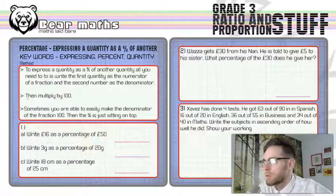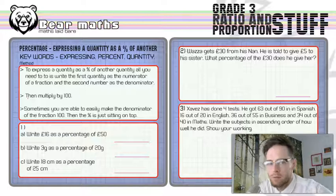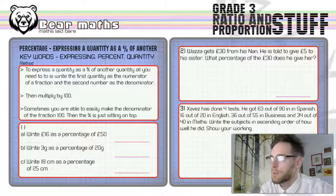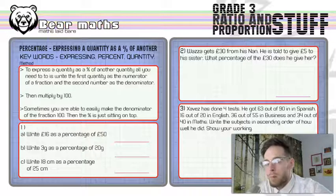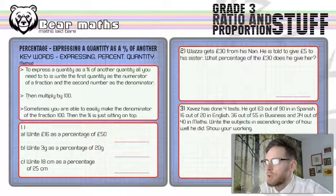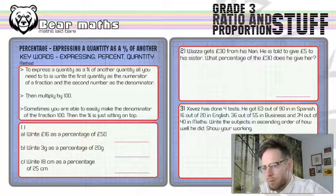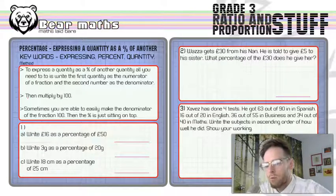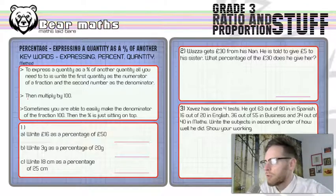To express a quantity as a percentage of another quantity, all you need to do is write the first quantity as the numerator of a fraction and the second quantity as the denominator of a fraction. Then you've just got to multiply by 100. Sometimes you're easily able to make the denominator of the fraction 100, and then the percent is just sitting on top of that because percent means out of 100.